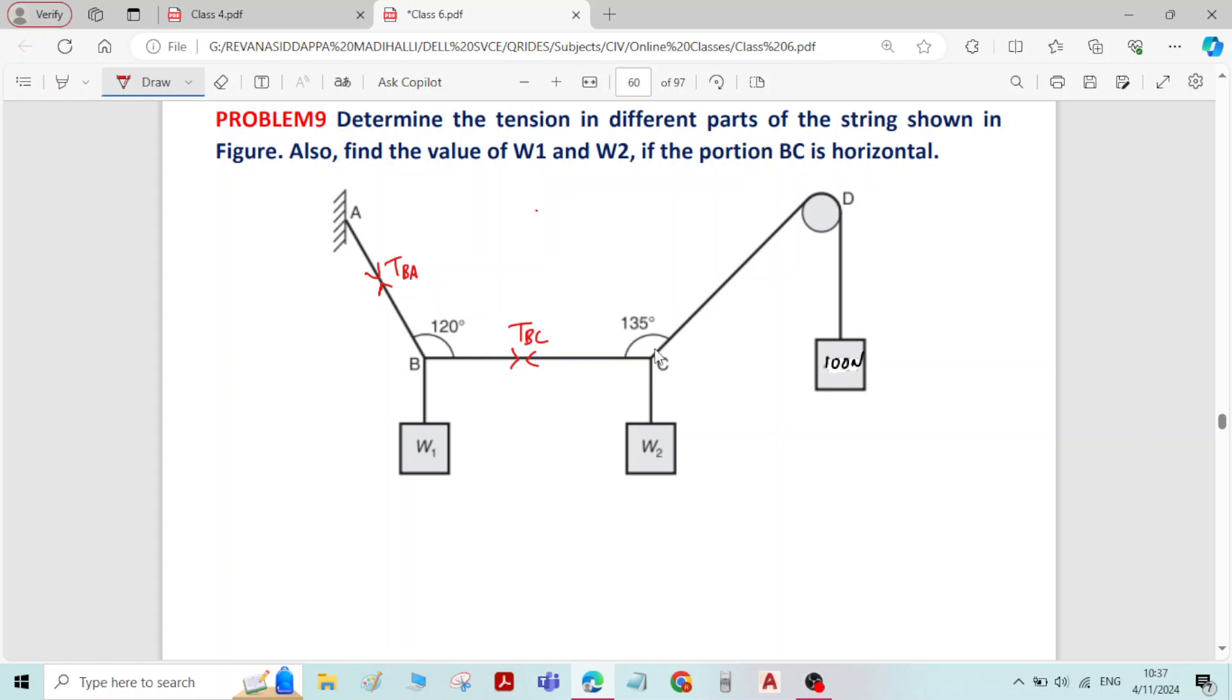So before that, we will find the angles at both joints B and C. So angle here is 90 degree because BC is horizontal. In the problem it is said that BC is horizontal and W2 is purely vertical. So angle is 90 degree. So the remaining angle here will be 360 minus 135 minus 90.